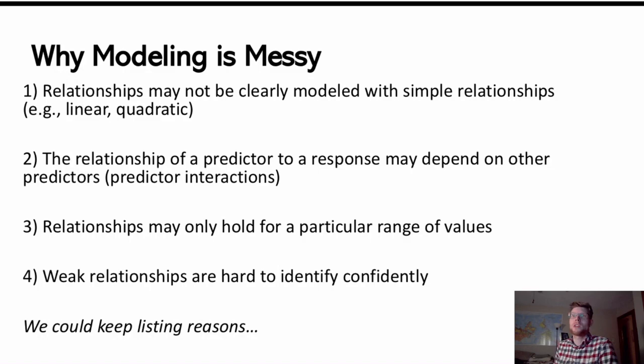Secondly, the relationship of a predictor to a response may also depend on other predictors. What I mean by that is not that there's just other predictors that can help predict, but that a predictor's relationship with the response may be different depending on what else is true about that unit of observation. We might notice that one predictor interacts with another predictor, and we might have what's called an interaction term. Because predictors themselves can interact with one another in their relationship with the response variable, it can make modeling a little bit messier.